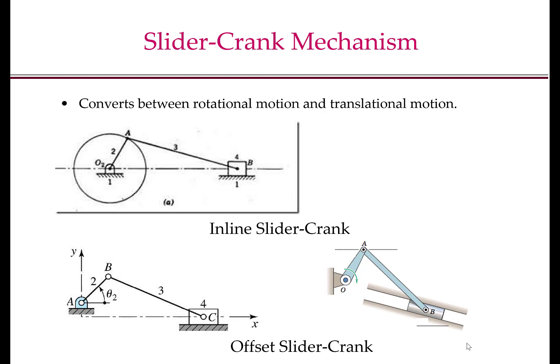The slider crank mechanism converts between rotational motion and translational motion. There are two types: inline slider crank mechanisms and offset slider crank mechanisms. In inline slider crank mechanisms, the point P undergoes translational motion along a line that passes through the fixed pivot O2. In offset slider crank mechanisms, there is a distance between the line of motion of the point T and the fixed pivot O2.